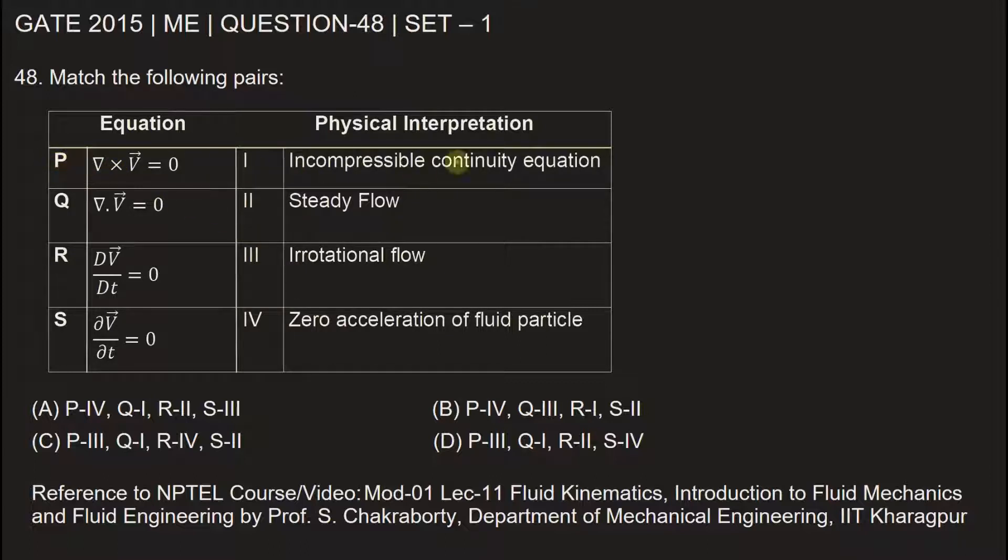The first equation P is del cross V vector. Now, del cross V represents the curl of velocity vector. And if it is equal to zero, if the curl of the velocity vector is zero, we say the flow is irrotational. Therefore, P will match with three.